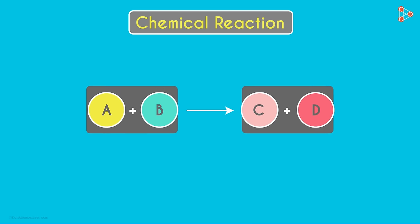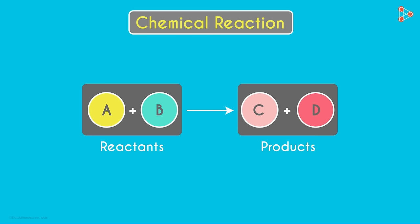Clearly, there are two sides to this equation. On the left, we have substances which take part in a chemical reaction. They are called reactants. And the new substances formed after the reaction are called products. Reactants react to form products.